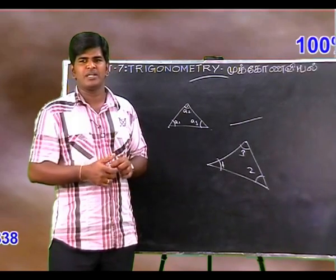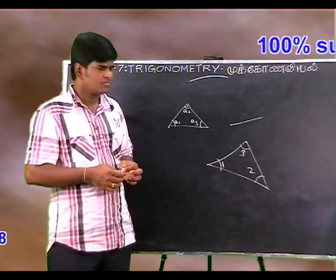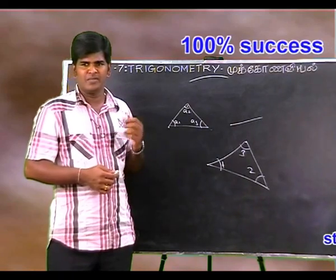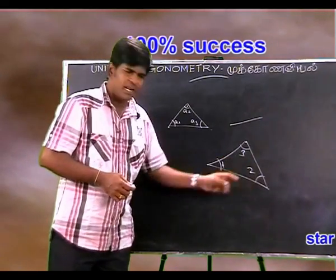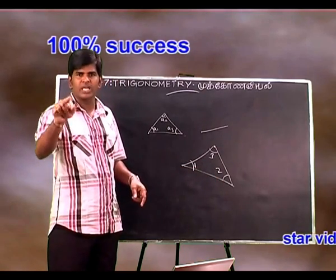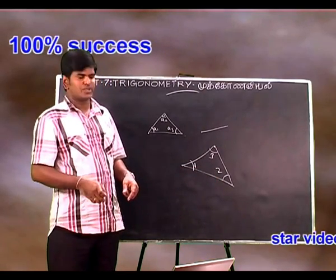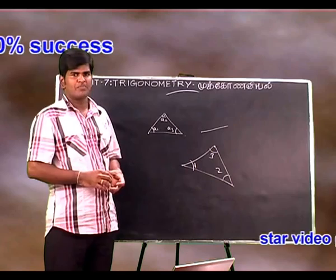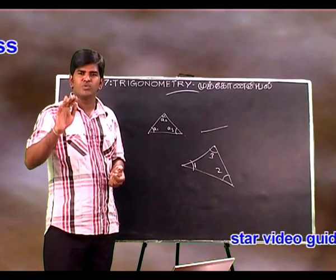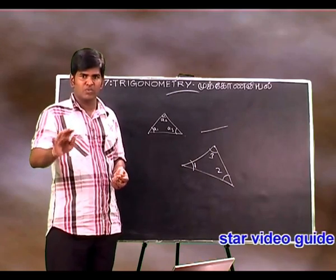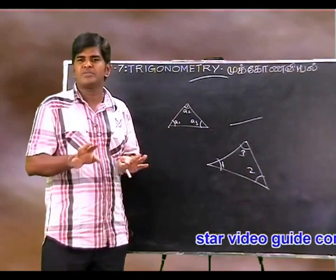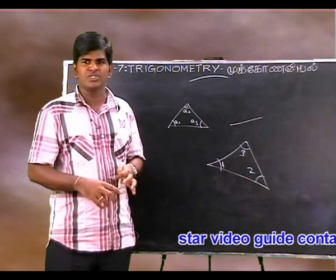There is a special property. We can find three properties here. If you have any angle, you can find it using trigonometry. This chapter is fully about the right angle triangle.